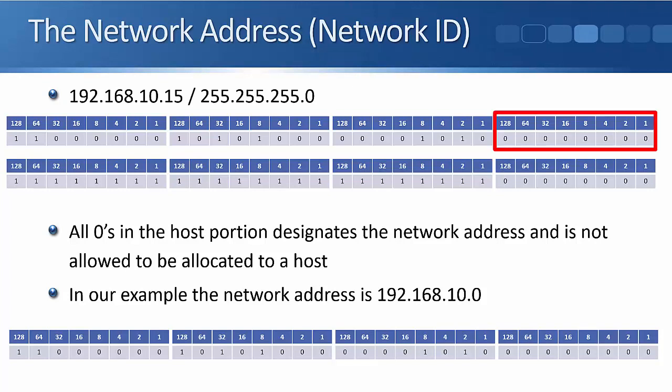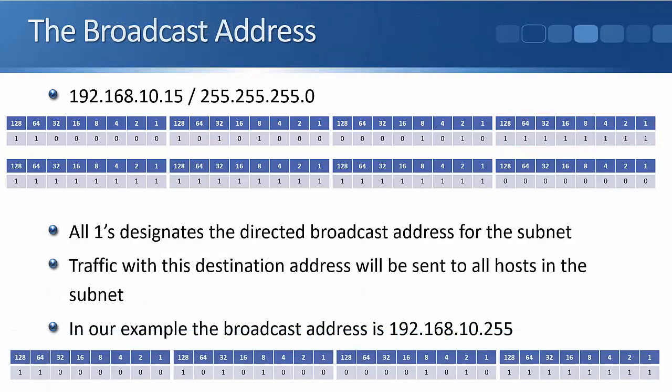The other address that cannot be assigned to a host is all ones in the host portion of the address. All zeros signifies the network address, which is the bottom address in the range. All ones is the top address in the range — that is the directed broadcast. Whenever you send traffic to the directed broadcast address, it goes to all hosts in that subnet, not to an individual host. So we cannot assign that address to an individual host.